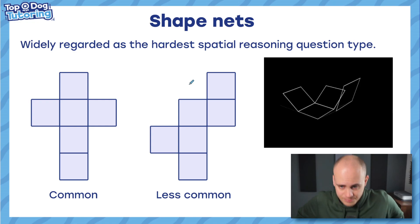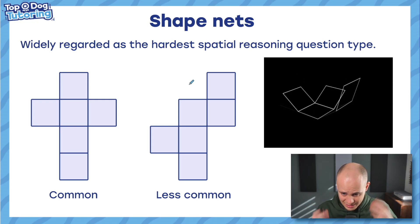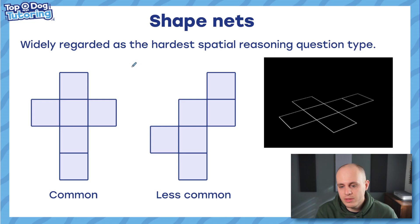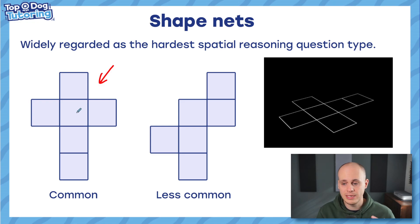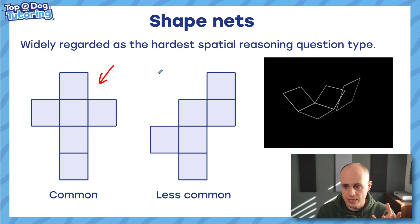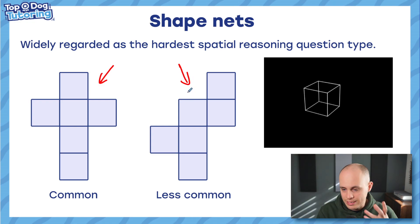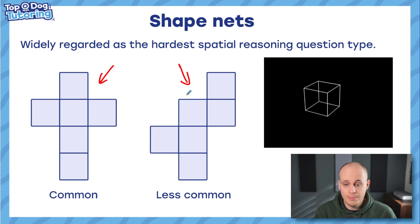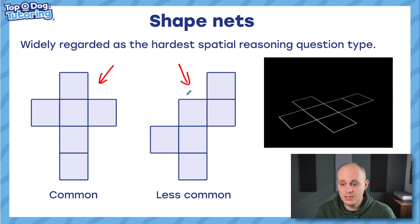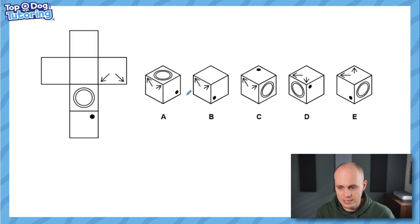Shape nets — we thought we'd leave the horrible one to last. This is widely regarded as the hardest spatial reasoning question type. It's the one we most often get comments from, people saying please can you do a video on nets. They're not very nice. Nets obviously can be for any 3D shape. You're most likely to see cube nets like we've got here. A net, just to make it really clear, is the 2D unfolded version of a 3D shape. If we folded this up like you can see in the animation here, then of course it will make a cube. There are actually quite a lot of different nets — maybe seven, maybe nine different types of nets that will fold together and make a cube. But today we're just going to focus on cube nets. I'm going to show you three different strategies across the three different questions.